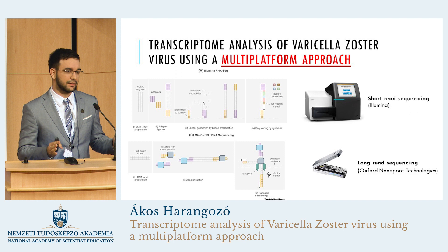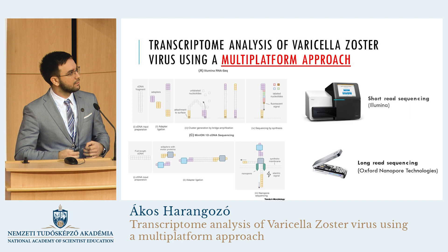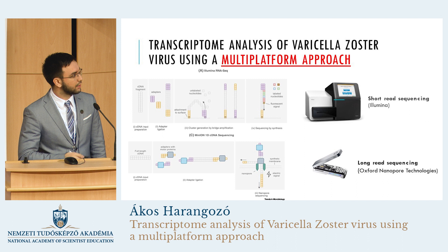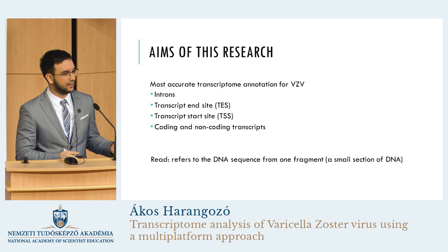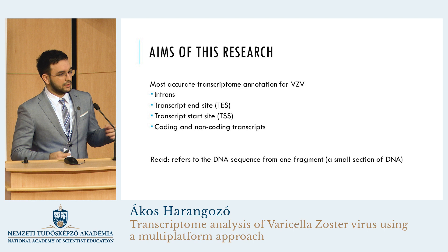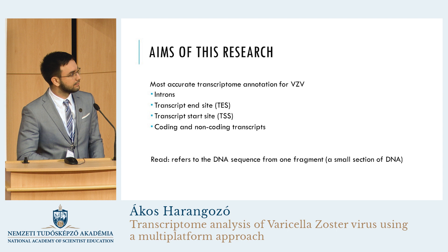Short-read sequencing is called short because the DNA fragments are 50 to 400 base pairs long. Long-read sequencing is called long-read because the DNA fragment can be any length — even multiple thousand base pairs long — but its disadvantage is that it produces a lower count of transcripts. The main aim of our study was to create the most accurate transcript annotation for VZV, including introns, transcript start sites, transcript end sites, and coding and non-coding transcripts. A read refers to a fragment of DNA that is sequenced by our sequencing machine.